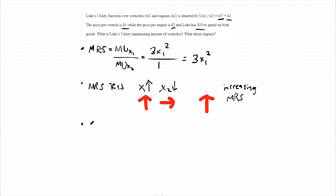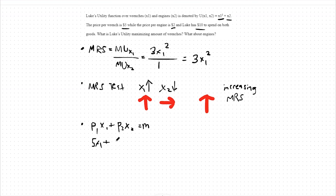So first, let's build out our budget constraint. Our budget constraint is p1x1 plus p2x2 is equal to income. Plugging in the values we have, that means 5 times x1 plus 2 times x2 equals 10.